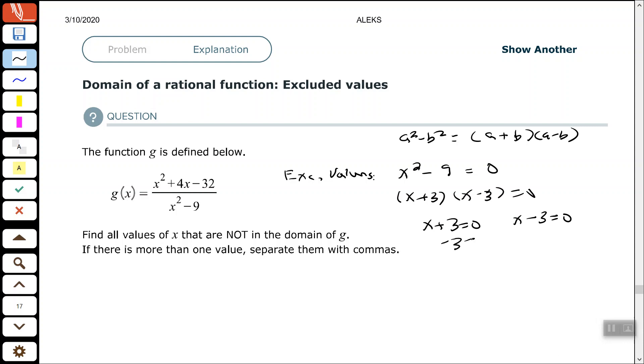So subtract 3. So one of the excluded values is negative 3. Add 3. The other excluded value is positive 3. So my excluded values are negative 3 and 3.